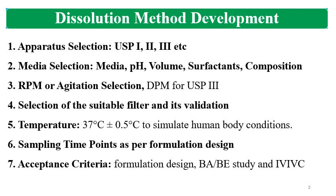Then comes RPM selection, or agitation selection. RPM and agitation is for USP-1 and USP-2, and it is called dips per minute for USP-3 apparatus. Generally for basket, 100 RPM is used, and for paddle, 25 RPM to 100 RPM is used based on the formulation. RPM should be such that you get consistent release and RHD within the defined range.